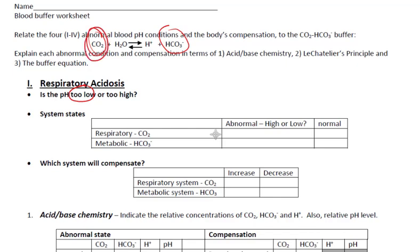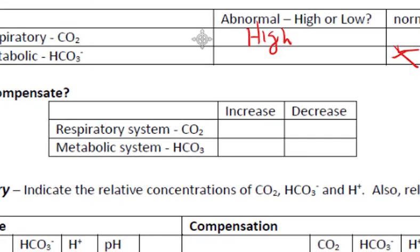The CO2 is not normal, so I'm not going to check 'normal' for respiratory — I'm going to check 'normal' for metabolic. Since the respiratory system controls the CO2, which is the weak acid, having too much acid will cause an acidic condition. Simply write 'high.'